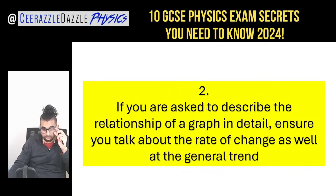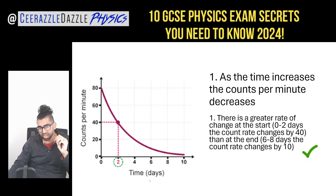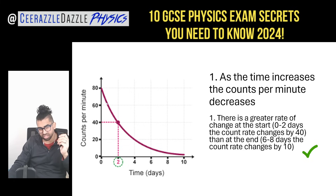Tip two: if you are asked to describe the relationship of a graph in detail, ensure you talk about the rate of change as well as the general trend. For example, given a graph, first you can say that as time increases the counts per minute decreases — that's the first mark. But the second mark is about the rate of change.